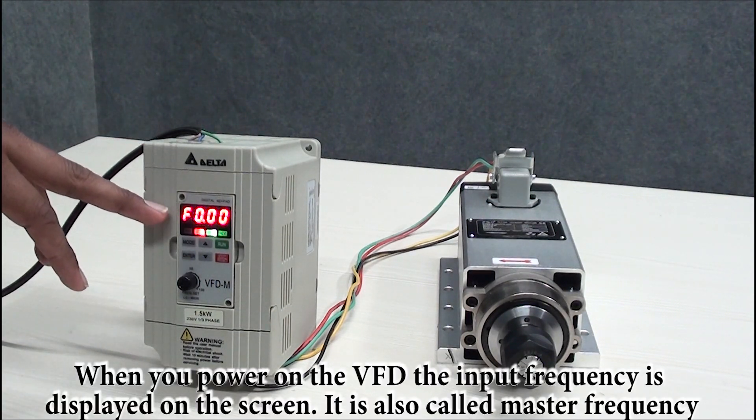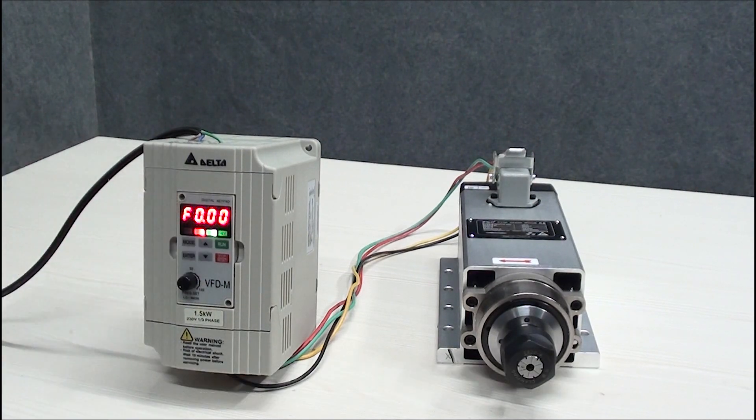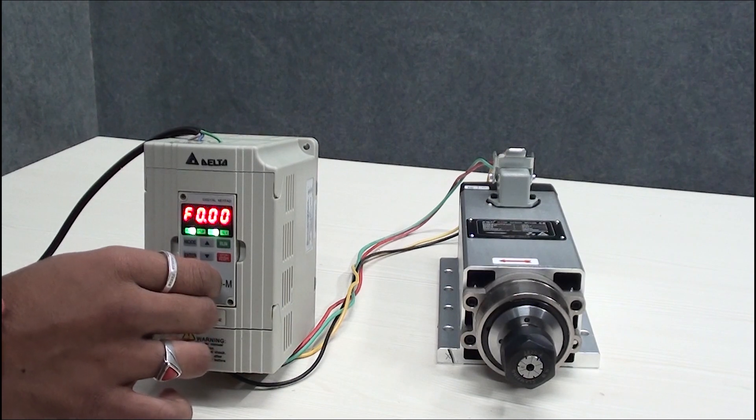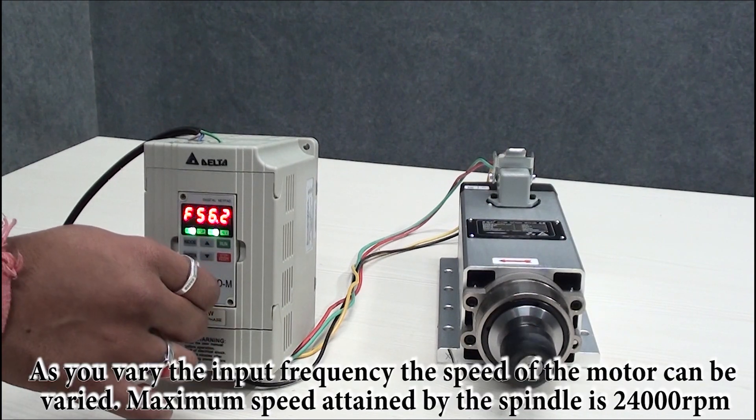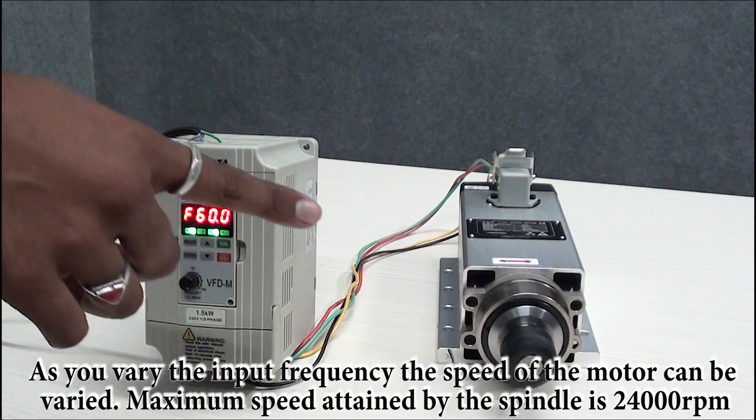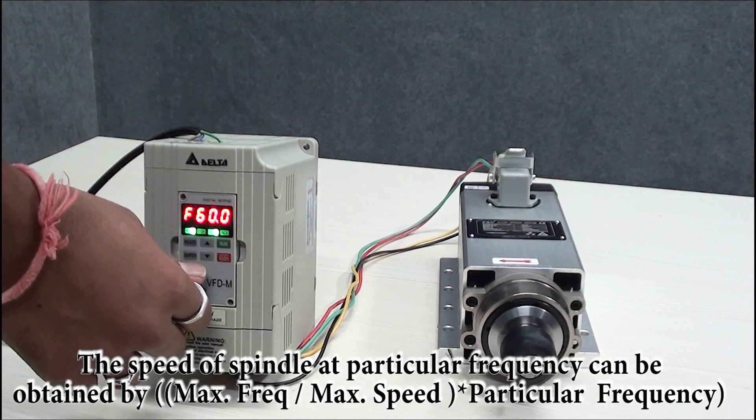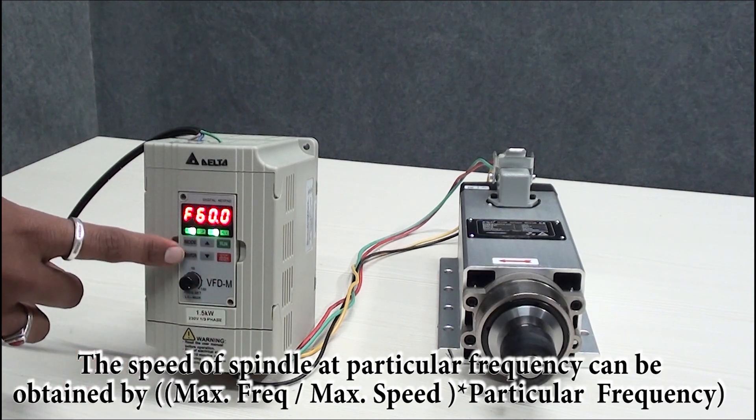As you press run button and as we vary the potentiometer, by default frequency which is 60 hertz displays on this VFD and the RPM of the spindle is 3600 RPM. But you can vary the RPM of spindle by changing the parameter of master frequency from 0 to 400 volts.